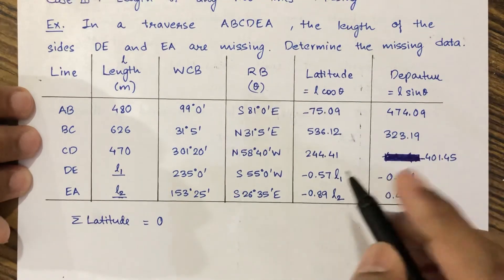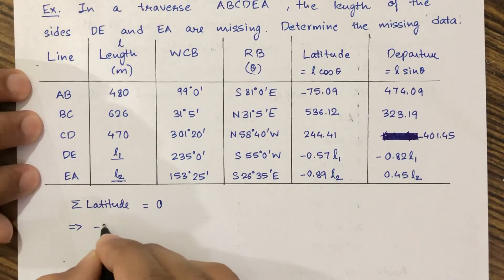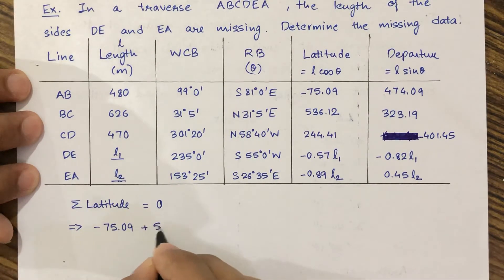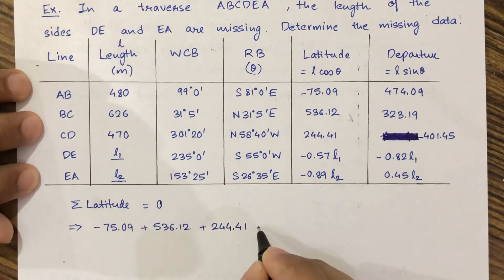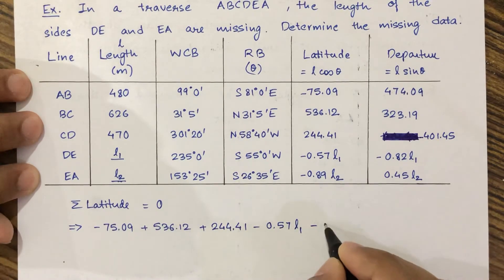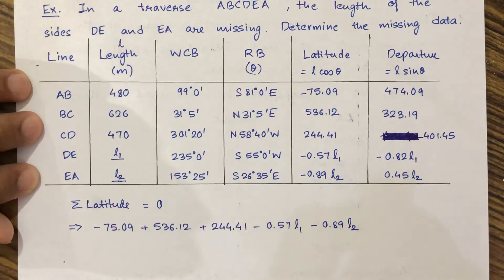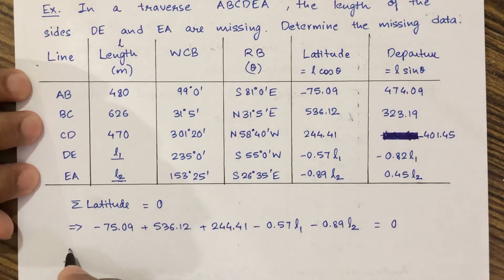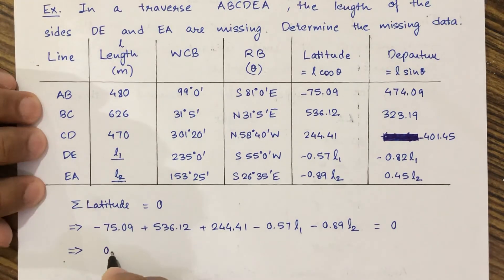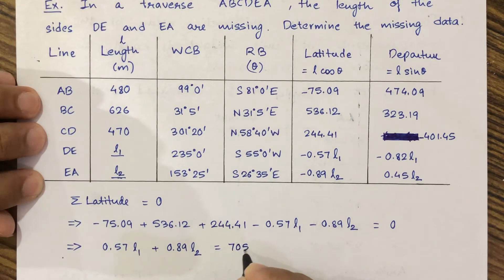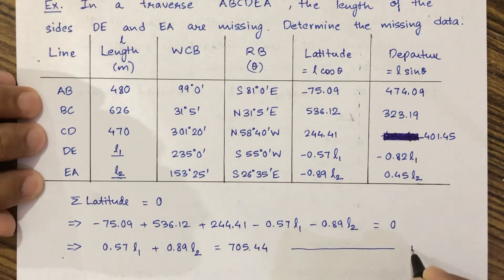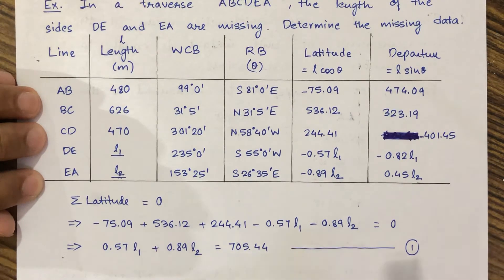Now we find the summation of latitudes, which equals zero. Adding all latitude values: −75.09 + 536.12 + 244.41 − 0.57L1 − 0.89L2 = 0. On solving, we get: 0.57L1 + 0.89L2 = 705.44. Let us call this equation number 1.